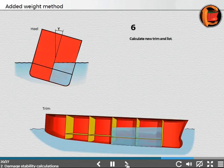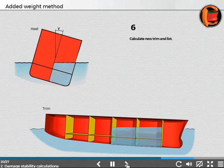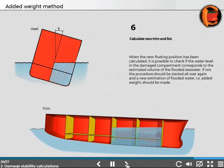Step 6: Calculate new trim and list. When the new floating position has been calculated, it is possible to check if the water in the damaged compartment corresponds to the estimated volume of flooded water. If not, the procedure should be started all over again, and a new estimation of flooded water, that is, added weight, should be made.